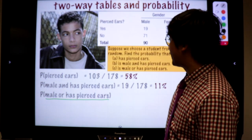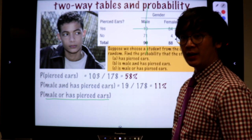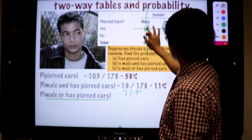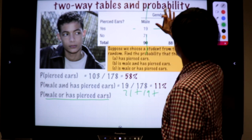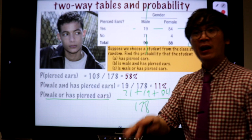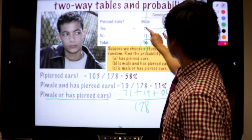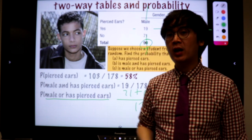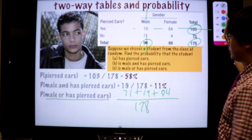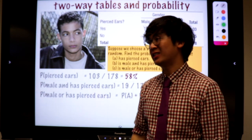Male or has ear piercing — that's a union. So what are we going to add? 71 plus 19 plus 84, all over 178. Can we use 90 plus 103 over 178? No, because you're going to count male-and-ear-piercing twice. So be careful with an OR operation — make sure you're not double counting. This is non-conditional because there's no conditions; it's from a sample space of all students.